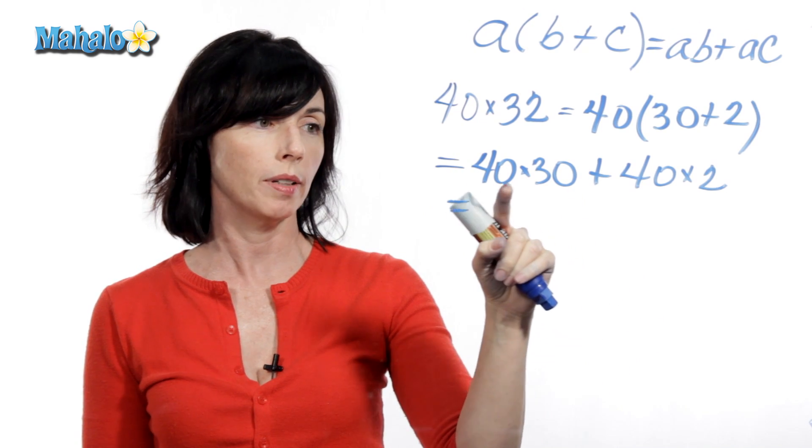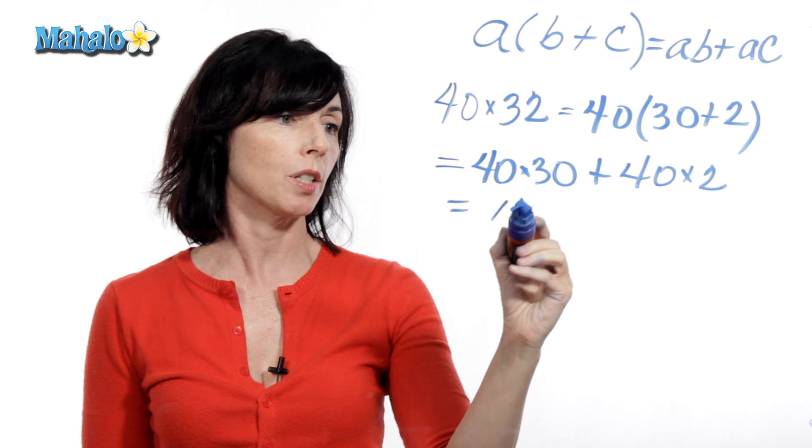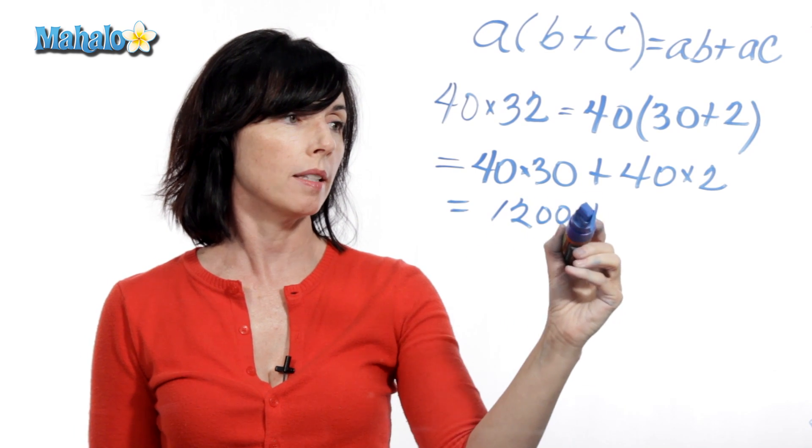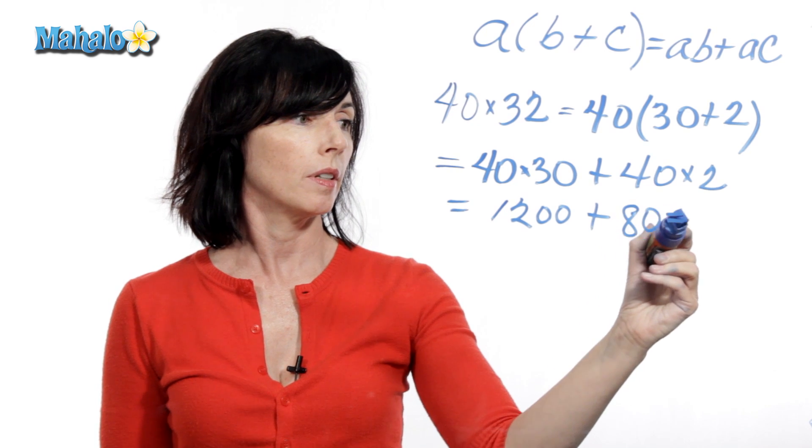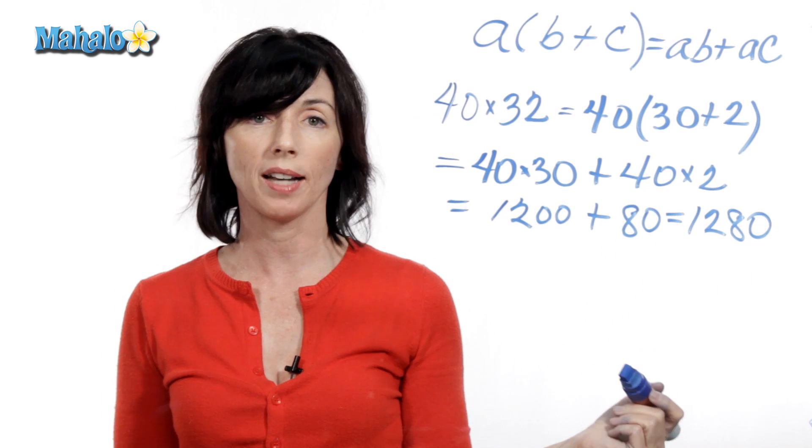4 times 3 is 12, and I just add these two zeros. 40 times 30 is 1,200, plus 40 times 2 is 80, so I get 1,280.